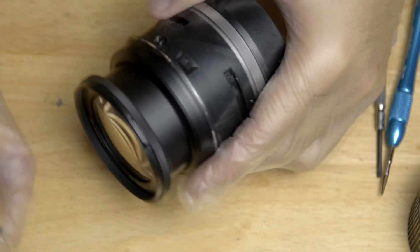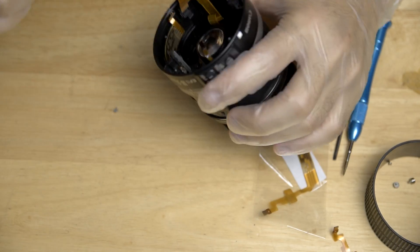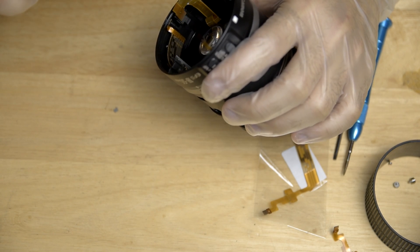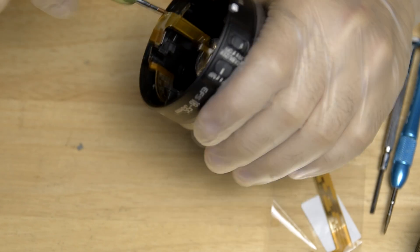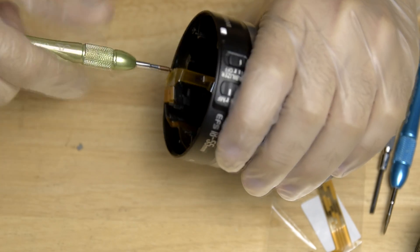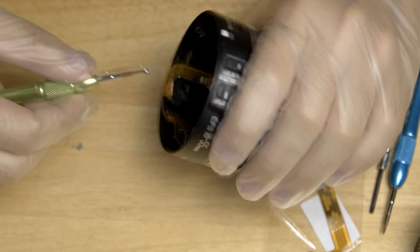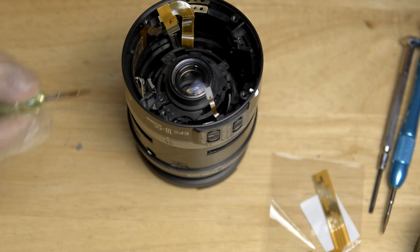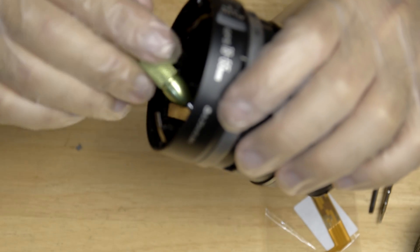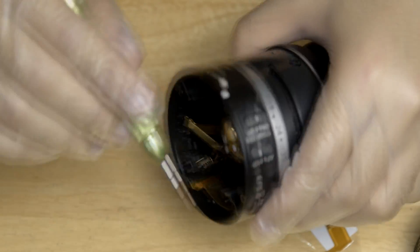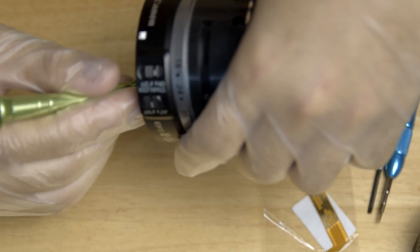Then after that, you can now remove the aperture flex cable. You can go ahead and remove the contact brush.